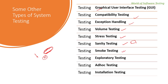Smoke testing is performed on a build to verify if the build is further testable. Similar to sanity testing, but its purpose is to verify if the build is stable enough to test. It verifies that the build is stable and all critical functionalities are working fine. Smoke testing is done for the complete system — it is end-to-end testing.